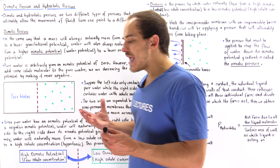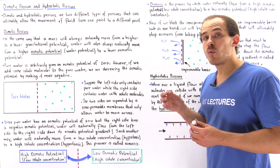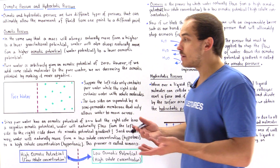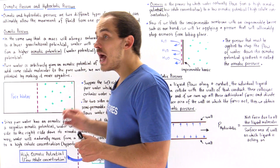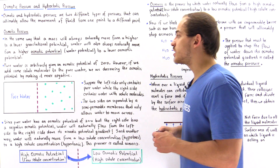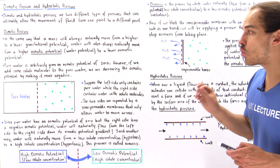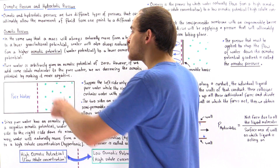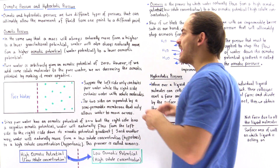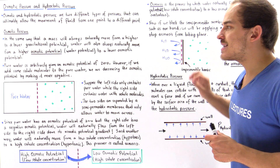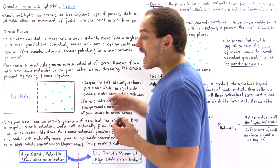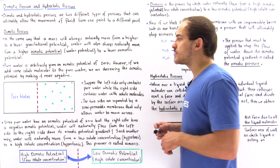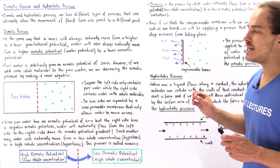If we take pure water and add some type of solute molecule, for example sodium ions, we decrease the osmotic potential of that non-pure water, making it more negative. Pure water has a potential of zero, but adding solute molecules decreases the osmotic potential, making it more negative.